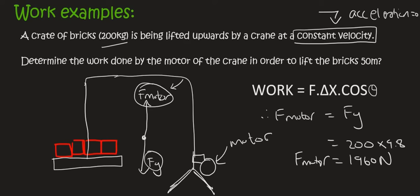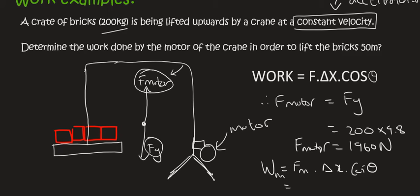And so now we can work out the work by saying W of the motor is equal to force of the motor times by the displacement times by the cos of theta. Now, the force of the motor is 1960. The distance that these bricks are going to be moving is 50 meters. So the force of the motor is in the upwards direction, and the bricks are also moving in the upwards direction, and so that is zero degrees. And so we're going to say cos of zero.